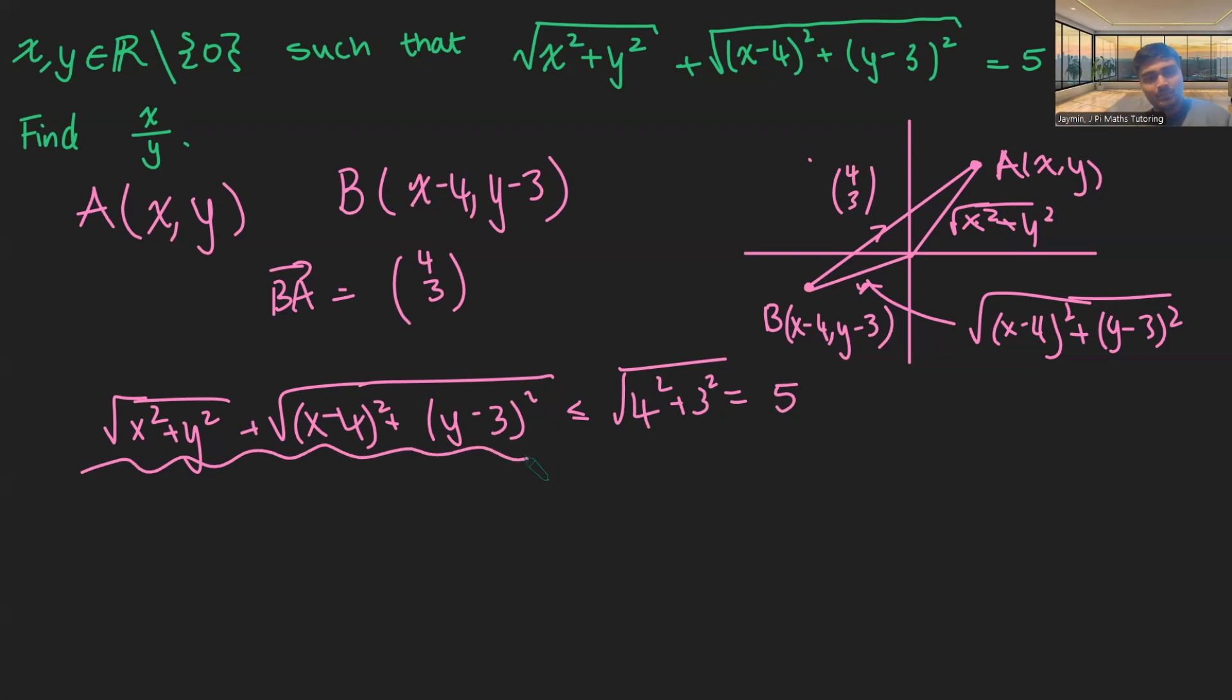But from the question here, we've already told that this equals five. So in fact, what we've got is equality. And equality only occurs in the triangle inequality if these two, this is basically one straight line. So it's a degenerate triangle. So it kind of looks something. So that's your longer side. And normally in an ordinary triangle, your two other sides would look like this. However, it actually looks a bit more like this, where these are supposed to be directly in line.